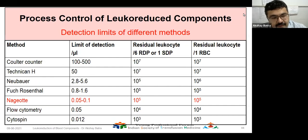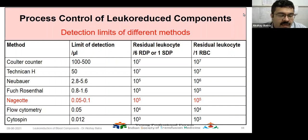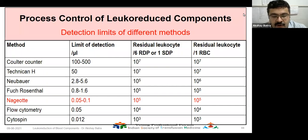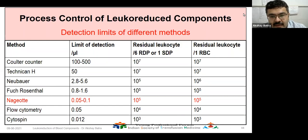Different methods available for leukocyte counting: the Nageotte method has a detection limit of 10^5, which is 10 times lower than the standard we intend to achieve in a leukoreduced blood product. More sensitive methods such as flow cytometry are available but are only for research purposes. The Coulter method can only detect down to 10^7, so it can be used for enumeration of leukocytes in buffy coat reduced products like buffy coat reduced PRBCs, but not for leukofiltered products.